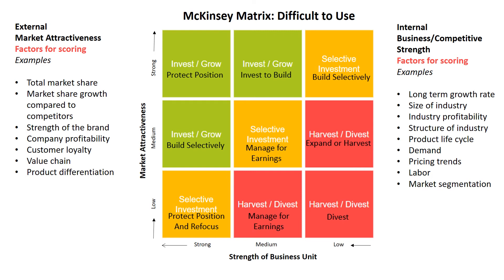Let's go back to the internal analysis and the McKinsey matrix, which, while interesting, is a bit difficult to use. The 3x3 table is driven by two variables: the external market attractiveness of the business and the internal strength of the business. For this example, we have arbitrarily selected factors for each variable to score the business. Depending on how the business scores, the client will have insights on whether they should invest and grow — the green squares — be more cautious and selective, the yellow squares, or harvest and divest, which would be the lower right red squares.